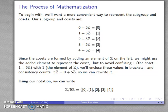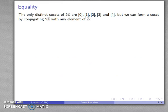So here's my cosets. And using the notation that we have, I can say that the quotient thing, Z divided by 5Z, gives us this set 0, 1, 2, 3, 4.